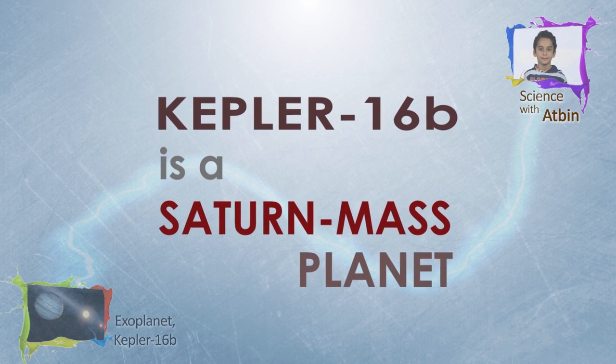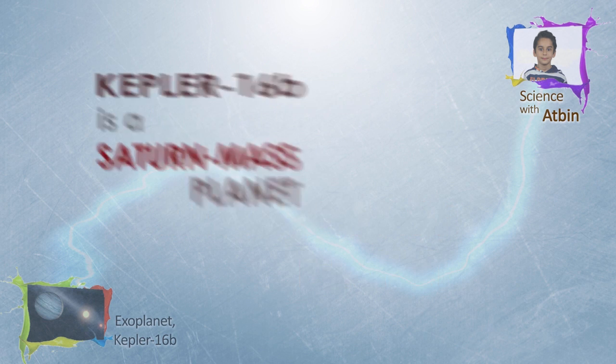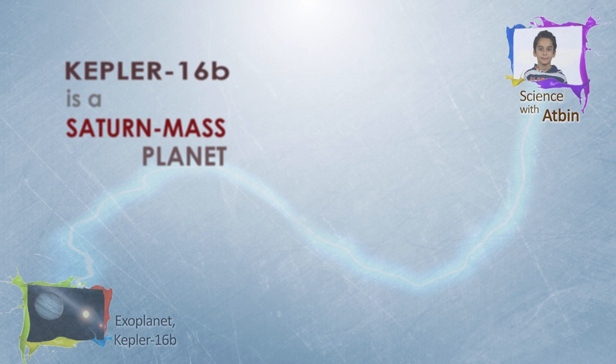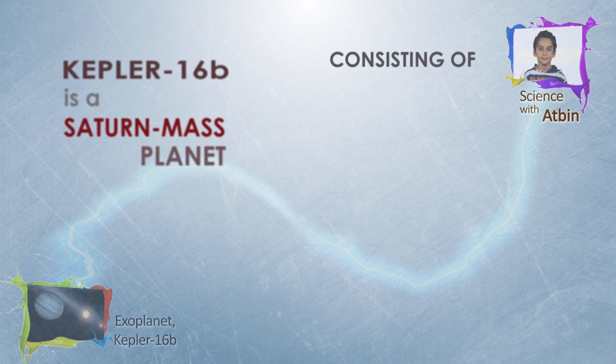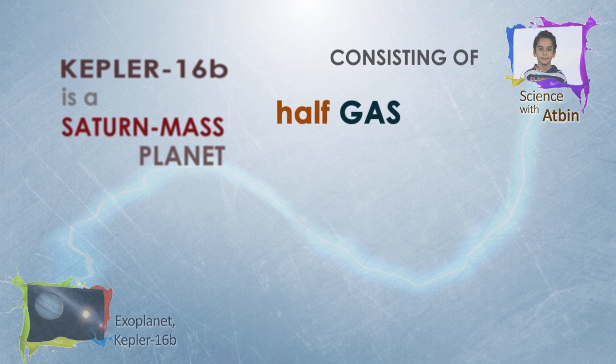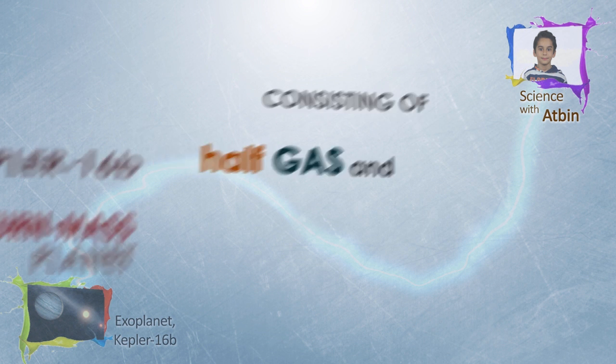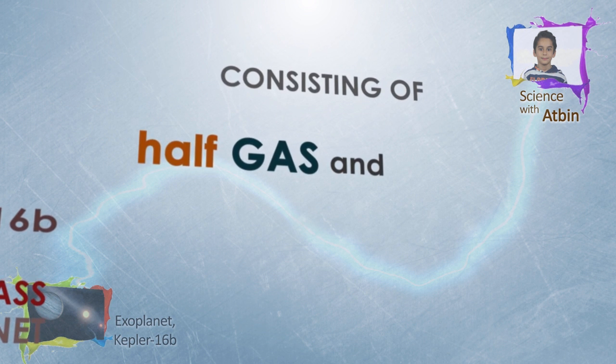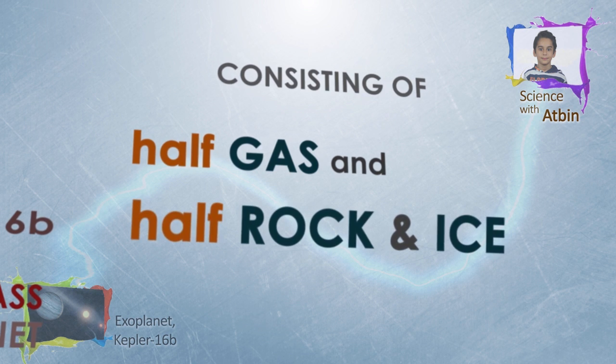Capital 16b is a Saturn-like planet consisting of half gas and half rock and ice material.